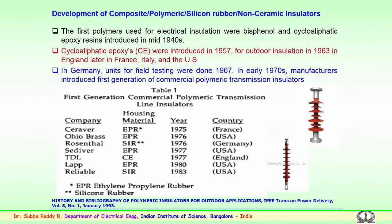The terminologies composite, polymeric, silicon rubber, or non-ceramic will be used interchangeably during the discussion. These insulators are basically organic in nature and were first used somewhere in the 1940s. The first polymers tried for electrical insulations were bisphenol and cycloaliphatic epoxy resins, introduced in the mid-40s to 50s. Later, cycloaliphatic epoxies were introduced in the late 50s, particularly for outdoor insulation.